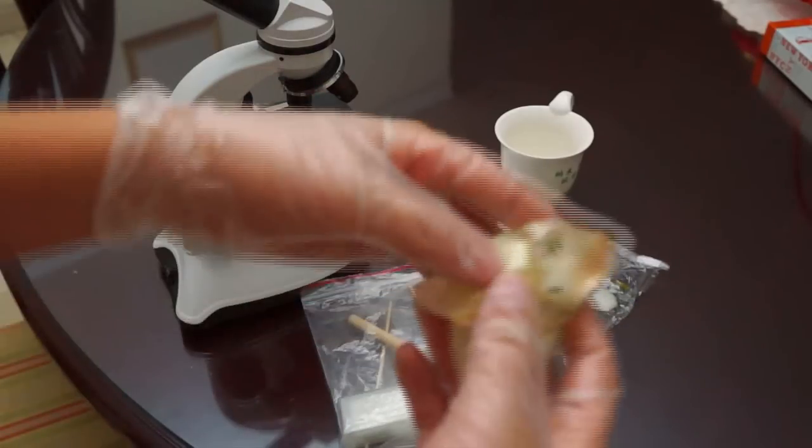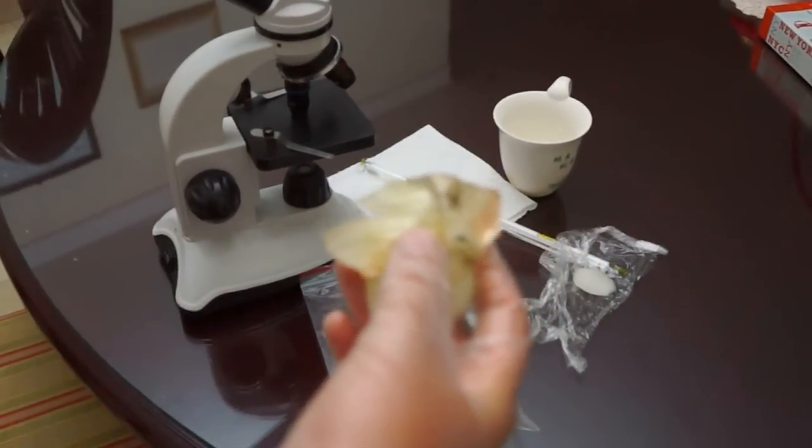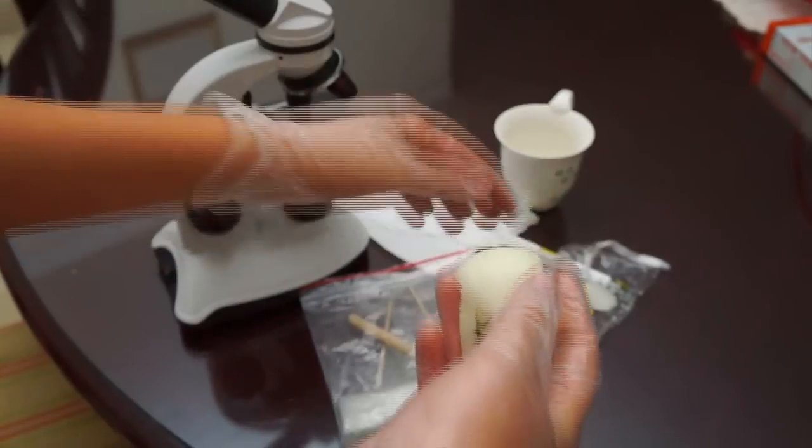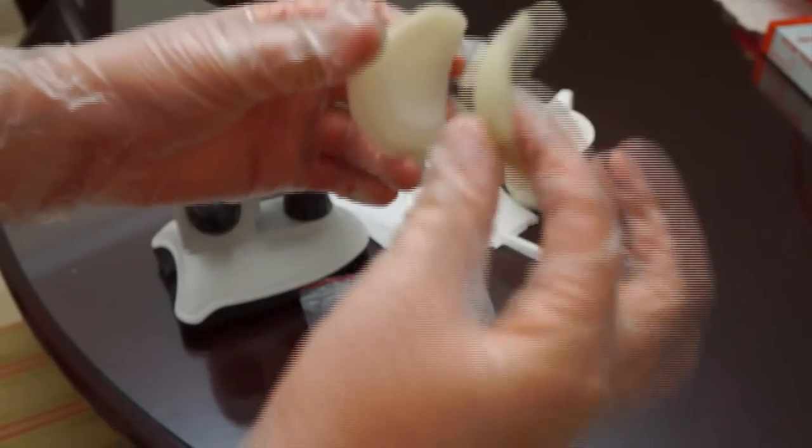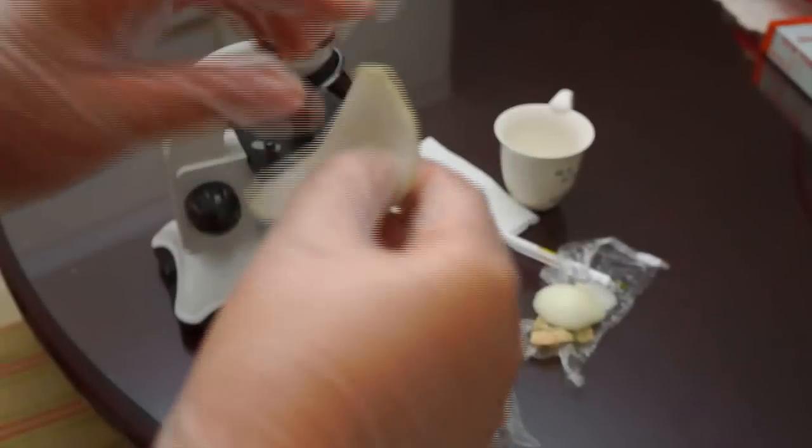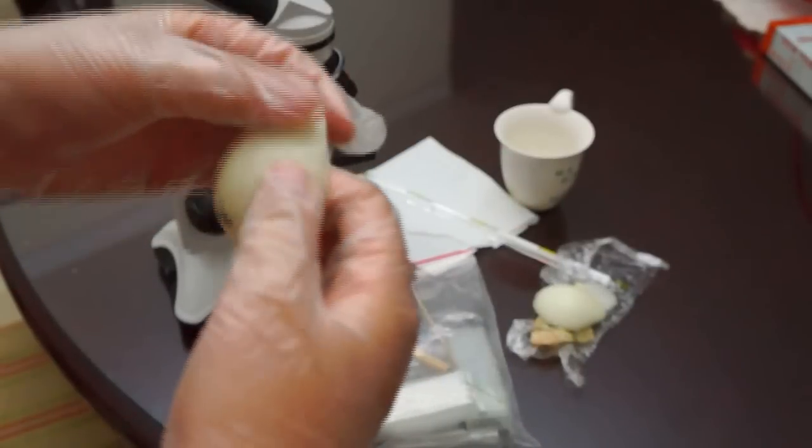First we are going to take out what we don't need from the onion or the outer core. We do not need this brown thing. We do not need the inside core either, only the crust, the part that we see on the outside.